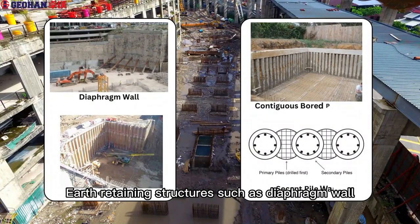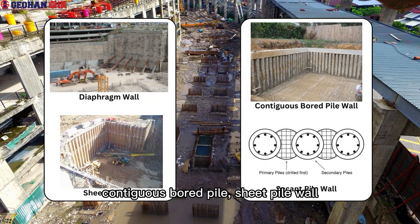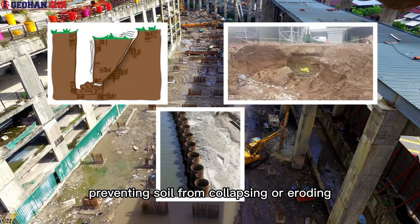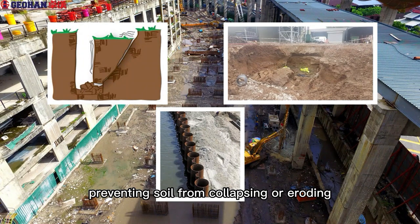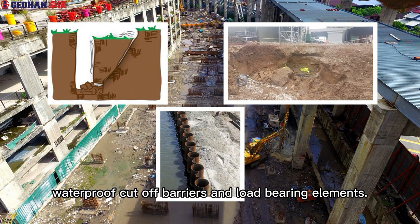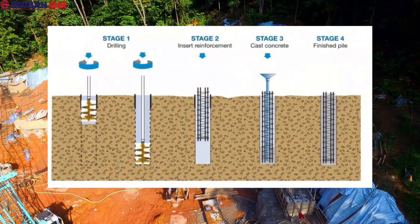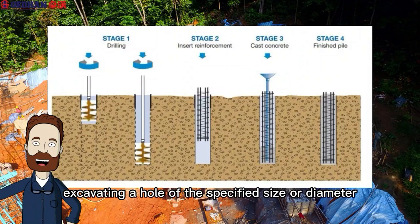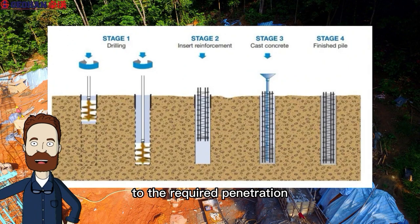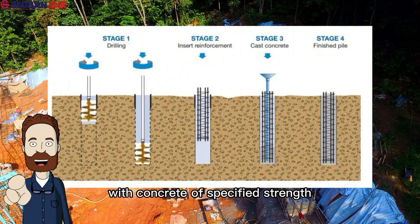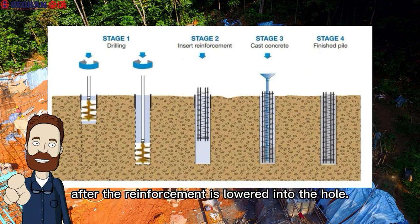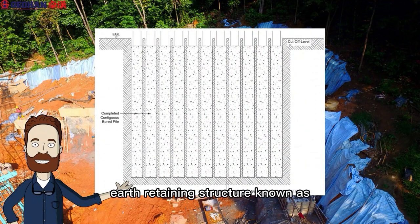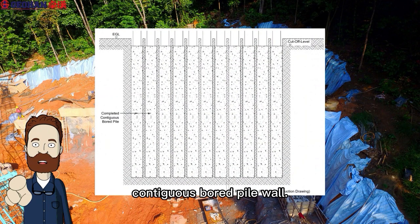Earth retaining structures such as diaphragm wall, contiguous bored pile, sheet pile wall, and secant pile wall support the sides of deep excavations, preventing soil from collapsing or eroding, as well as providing waterproof cutoff barriers and load bearing elements. Cast in situ bored piles are formed by excavating a hole to the required depth and casting it with concrete after reinforcement is lowered. When piles are constructed in a row, they form a contiguous bored pile wall.